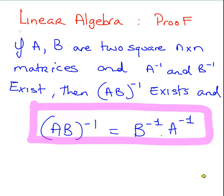In this presentation we are going to look at a proof. If A and B are two square n by n matrices — both A and B have the same dimensions and are both invertible — then A times B is also invertible. Specifically, we want to prove that the inverse of A times B is equal to the inverse of B times the inverse of A. Note that when dealing with matrices, ordering is particularly important.